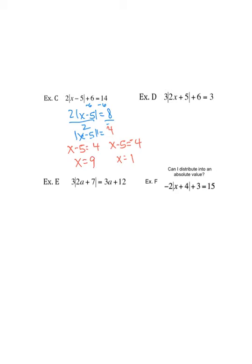So, we plug it back in. 9 minus 5 is 4, the absolute value is 4, 2 times 4 is 8, 8 plus 6 is 14. Correct. If I put 1 in, 1 minus 5 is negative 4, but when I take the absolute value becomes positive 4, 2 times 4 is 8, plus 6 is 14. Both of these work. Good to go?